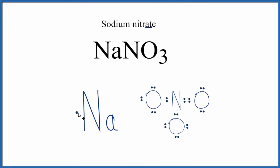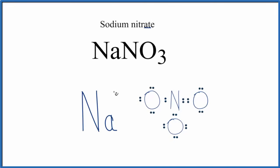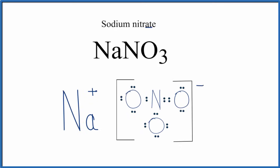The sodium, being the metal, will transfer that valence electron to the nonmetals. Since it's lost the electron, it becomes a 1 plus. The NO3 that gained it becomes a 1 minus. We put brackets around the anion, the negative ion, and that makes this the Lewis structure for NaNO3, sodium nitrate.